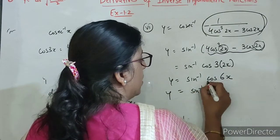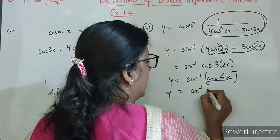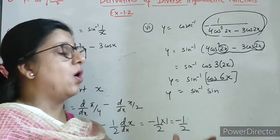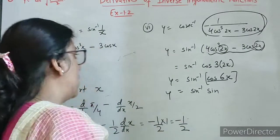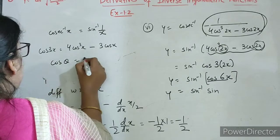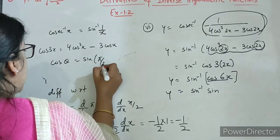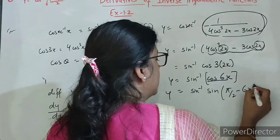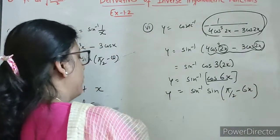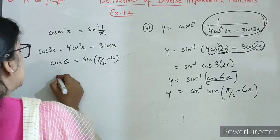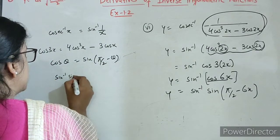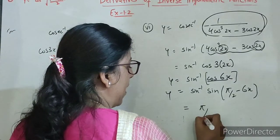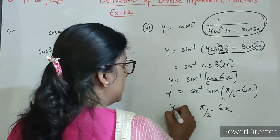Sine inverse ke saath hume cos mil raha hai, toh is cos ko hume sine mein change karna hoga. Aur kaise change karenge? Cos theta ko we can write as sine of 90 minus theta. So yeh hum likhenge pi by 2 minus 6x. Now which property we should use here? Sine inverse sine x equals to x. So we can write here pi by 2 minus 6x.